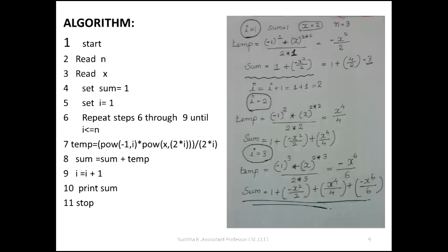Sum equals sum plus temp. Initially temp will equal one value, so sum equals that sum plus the current temp — that is, the running total updates each iteration.